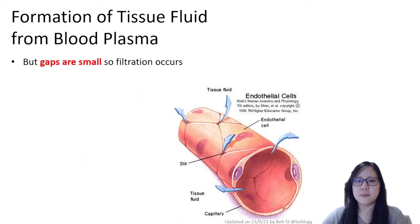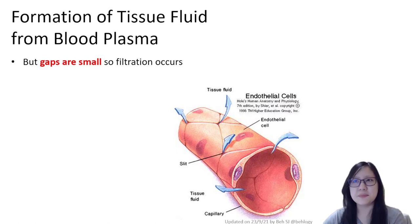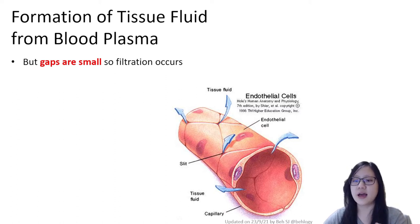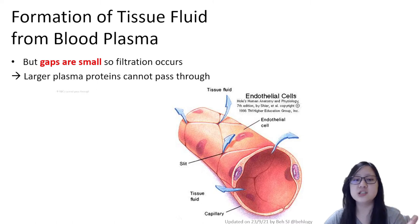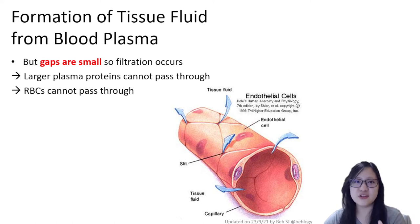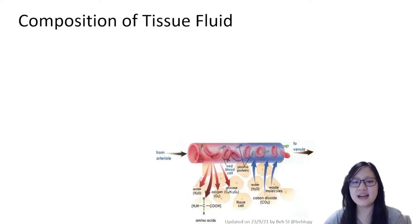Capillaries have endothelial cells — they are one cell thick — but between those endothelial cells there are pores, and those pores are essential in tissue fluid formation. Now, because the gaps are small, you cannot expect everything to pass through. There are things that will stay in the blood and will not become tissue fluid. Larger plasma proteins cannot pass through — small ones can, but larger ones cannot. Red blood cells definitely cannot pass through, nor can platelets, and this determines the composition of tissue fluid.